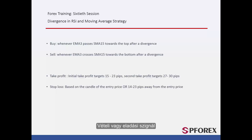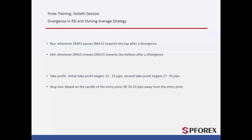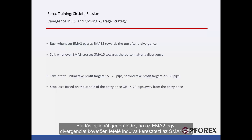A buy signal will be generated whenever EMA3 passes SMA15 towards the top after a divergence. A sell signal will be produced whenever EMA3 crosses SMA15 towards the bottom after a divergence.